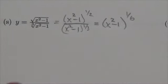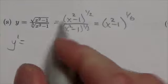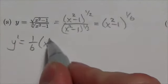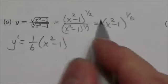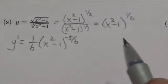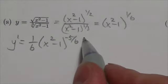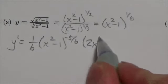That makes this substantially easier to work with. That means the derivative is now going to be 1 sixth. You're just going to do an application of the chain rule. x squared minus 1 to the negative 5 sixths, multiplied by the derivative of what's within the parentheses there, the inside function, 2x.